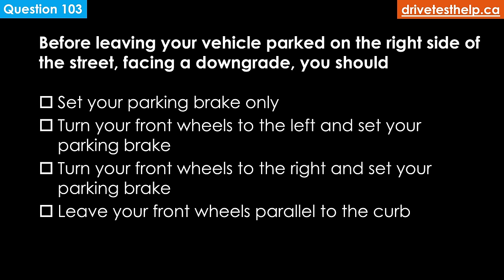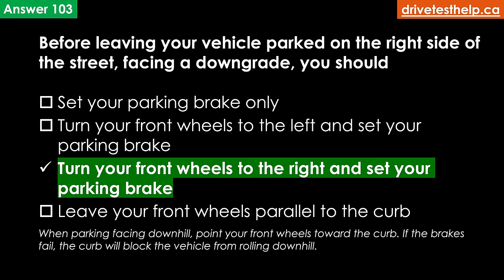Before leaving your vehicle parked on the right side of the street facing a downgrade, you should: set your parking brake only; turn your front wheels to the left and set your parking brake; turn your wheels to the right and set your parking brake; or leave your front wheels parallel to the curb. The correct answer is turn your front wheels to the right and set your parking brake. When parking facing downhill, point your front wheels toward the curb — if the brakes fail, the curb will block the vehicle from rolling. If there is no curb, point your front wheels toward the edge of the roadway so the vehicle rolls off the road, not into traffic.